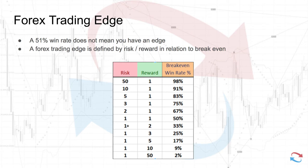I would rather go for a two-to-one risk/reward — risking one pound and going for two. If I can achieve a win rate of anything above 33%, I have an edge in the market. That's pretty much how it works; that is the true definition of an edge.